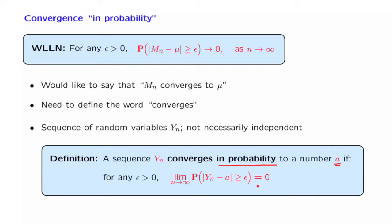This notion of convergence corresponds exactly to what is happening in the weak law of large numbers. In particular, we can describe the weak law of large numbers as saying that mn, the sample mean, converges to mu as n goes to infinity, but in a particular sense — in the sense of convergence in probability.